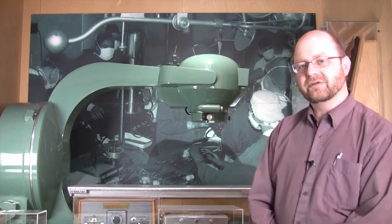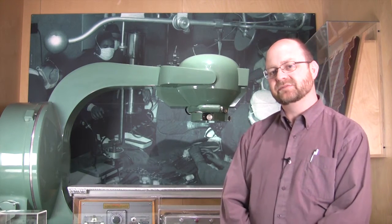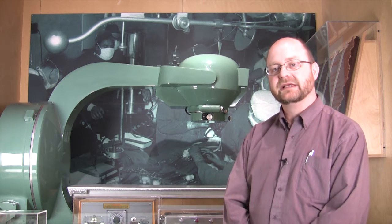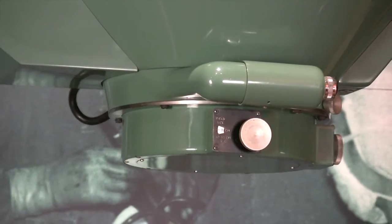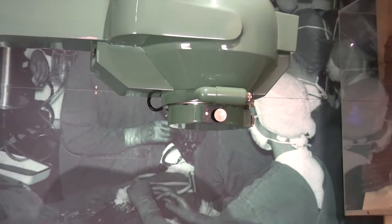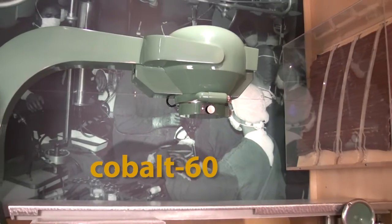Behind me is an example of one of the early cobalt cancer therapy machines that was created in Canada for the first time in 1951. Nuclear reactors are capable of making large quantities of the radioactive element cobalt-60, which were used in this machine.